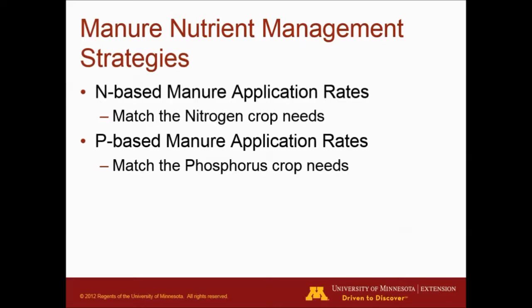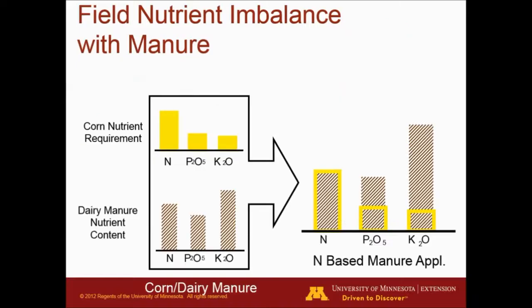So if we apply based on nitrogen, then for the other nutrients we're going to be short or we're going to be over-applying. This is the imbalance that we're dealing with when it comes to manure nutrients.